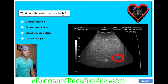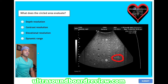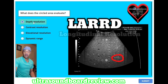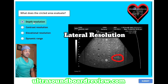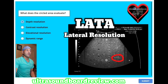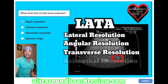What does the circled area evaluate? A, depth resolution. B, contrast resolution. C, elevational resolution. Or D, dynamic range. The answer is A, depth resolution — aka axial resolution. You have to make sure that you know some of the synonyms for axial resolution, which is LARD: longitudinal, axial, range, radial, depth. Keep in mind this can also evaluate lateral resolution, but that's not part of the options here. Also look for transverse resolution, angular resolution, and azimuthal resolution.